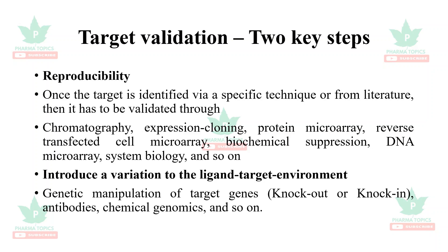Monoclonal antibodies are very useful in suggesting the validation of a particular target. In chemical genomics, by introducing a chemical and observing what happens to the gene, we get information about the genetic aspects of a particular molecule when it is bound. These aspects are important in target validation.